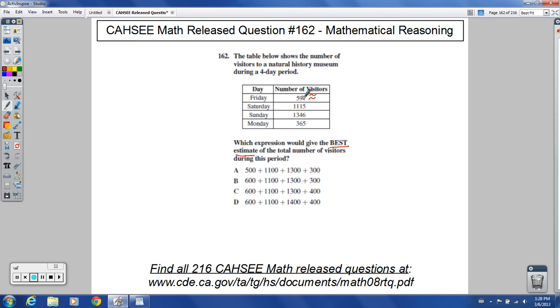So this would be 597. Look at this tens digit. As long as it's five or higher, we're going to round up. If it was four or lower, we would round down. So we're going to round up on this one. That's about 600.